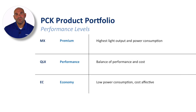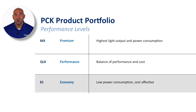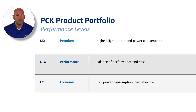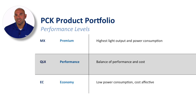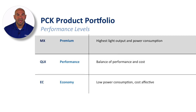When we talk about the possible performance levels of luminaires, we divide them into three levels. EC, or Economy, is low power consumption and often cost effective. QLX, for performance — think quality — is a balance of performance and cost. MX, the premium tier — think maximum — is the highest light output and power consumption.